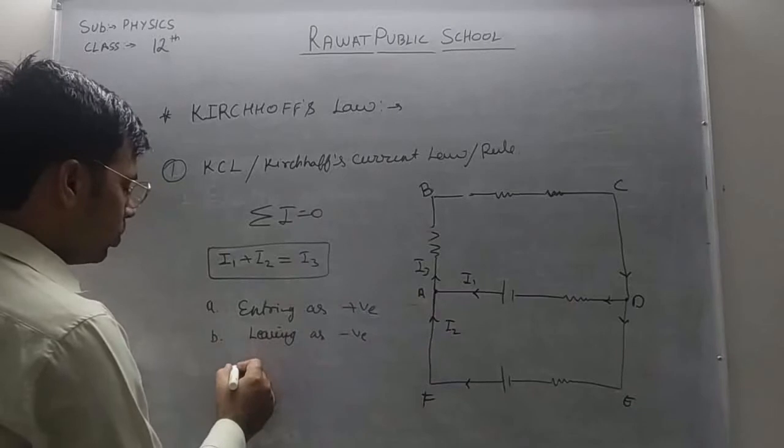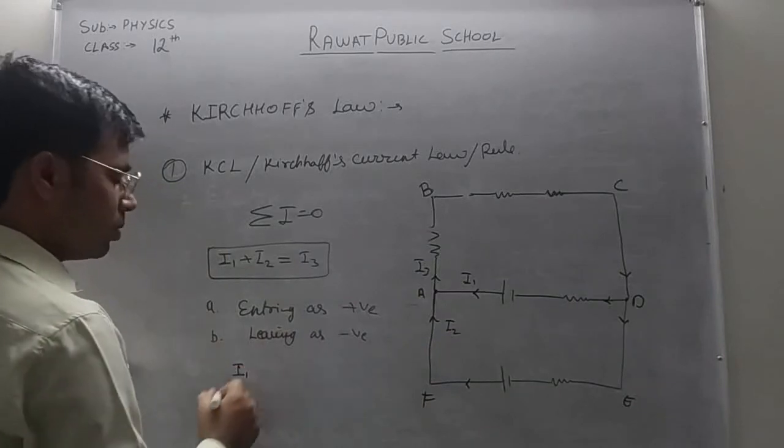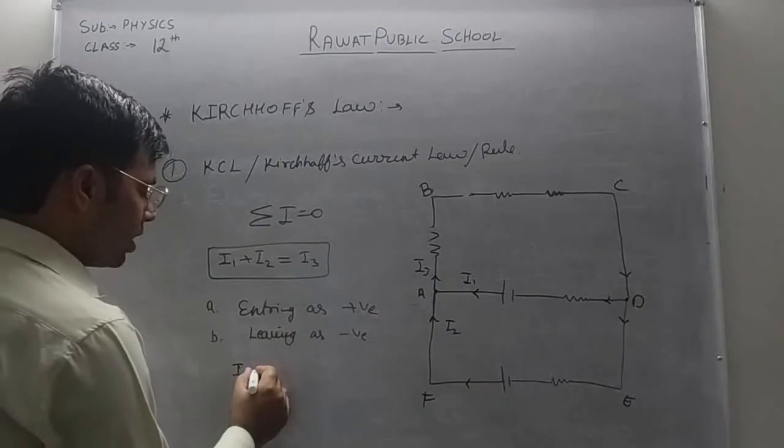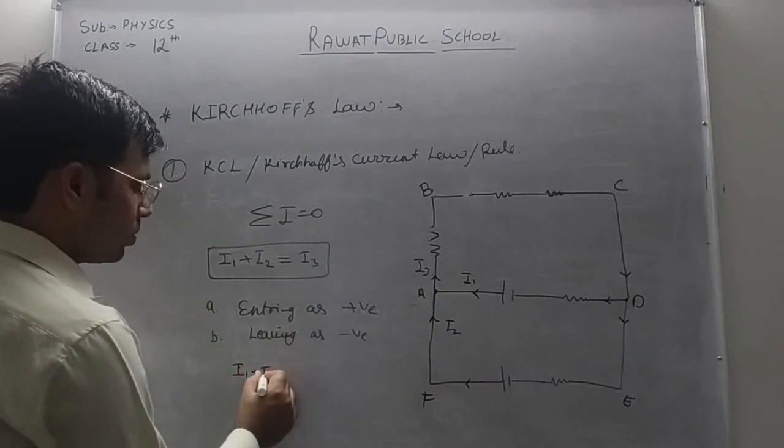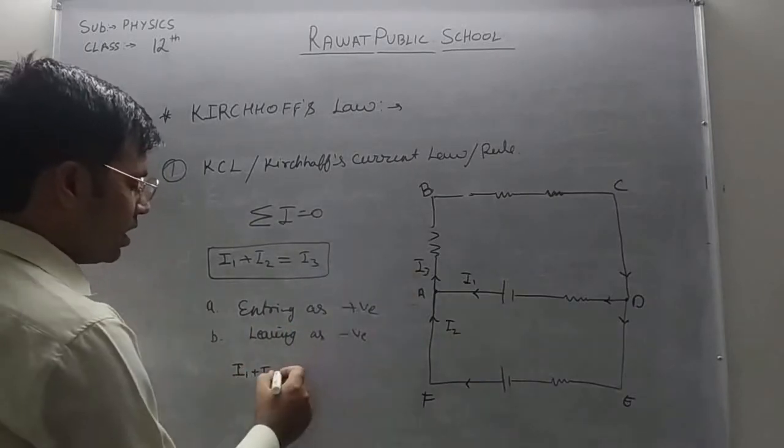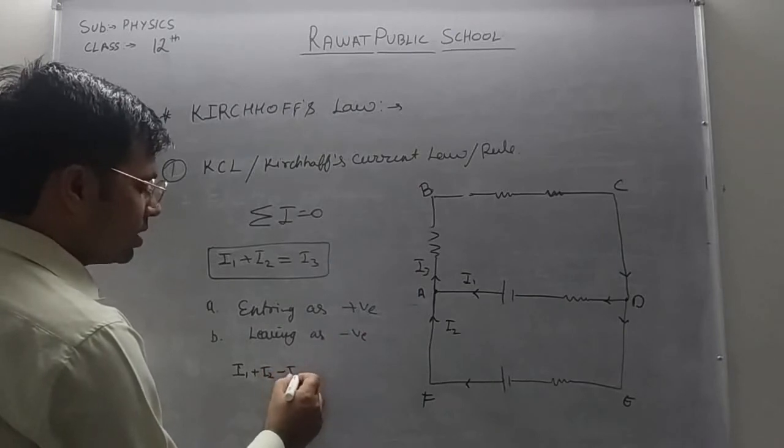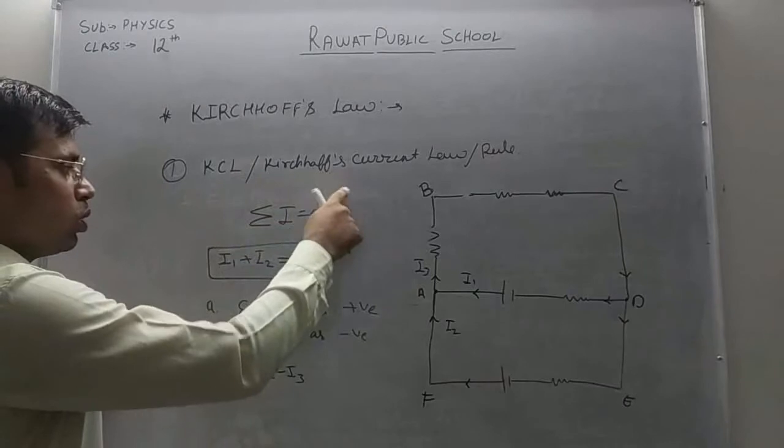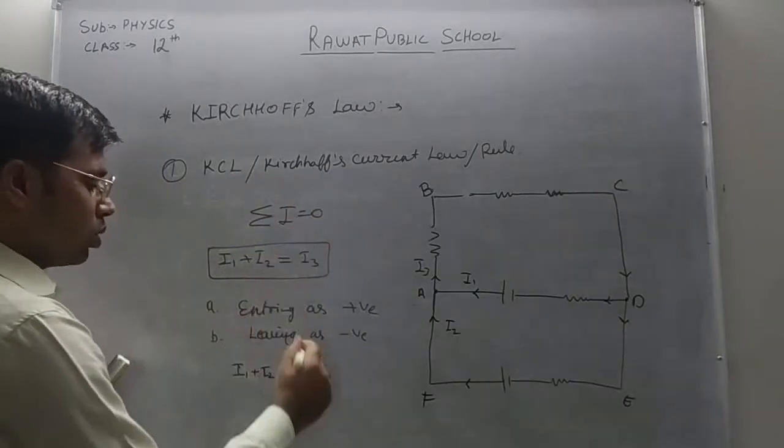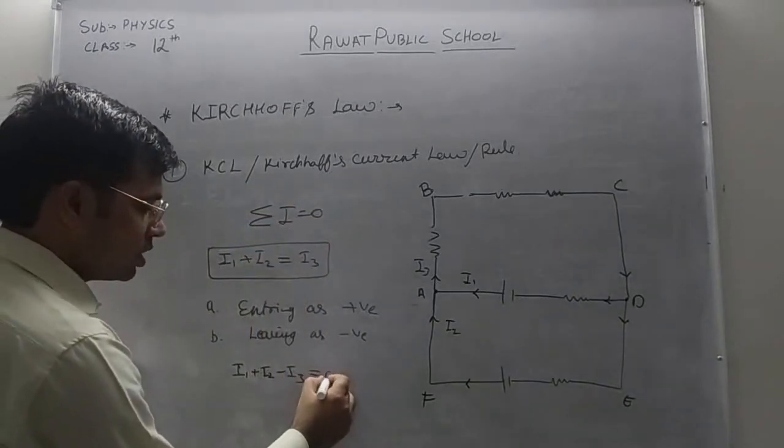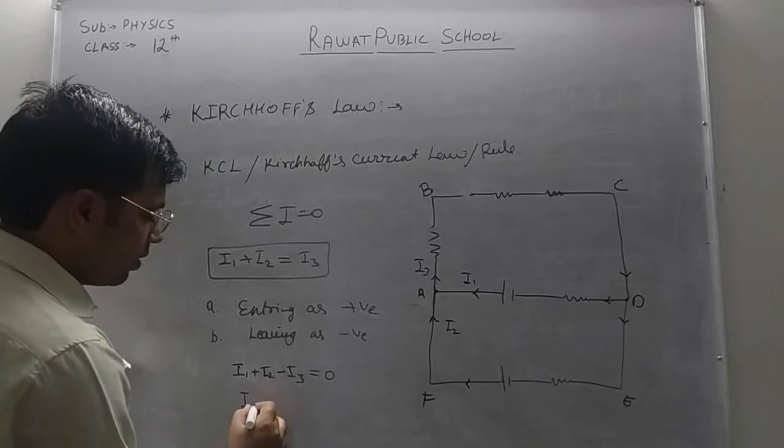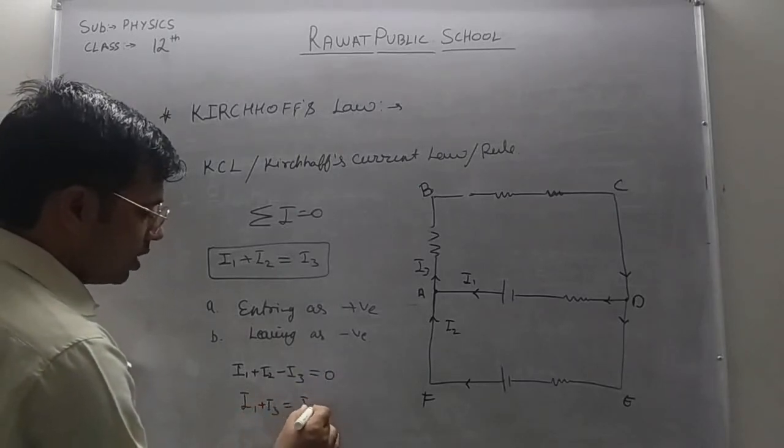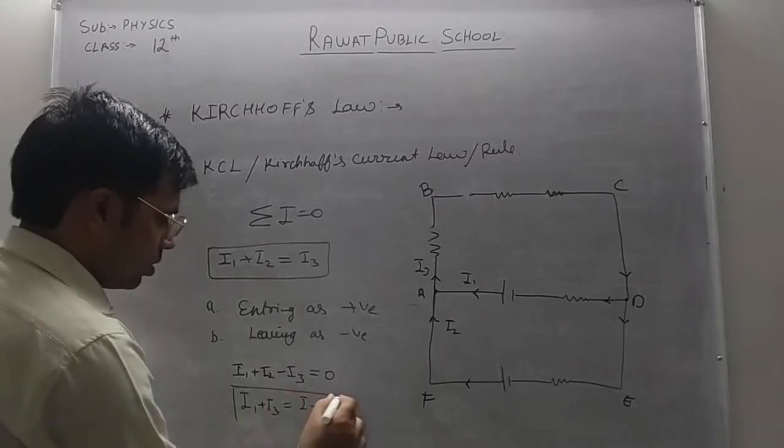I1 is entering so we will have to take it as positive. Now I2 is entering so we have to take it as positive. And I3 is leaving so we will be taking it as negative. And according to Kirchhoff's rule this summation is zero. So, summation is zero. By solving it we got I1 plus I2 is equals to I3.